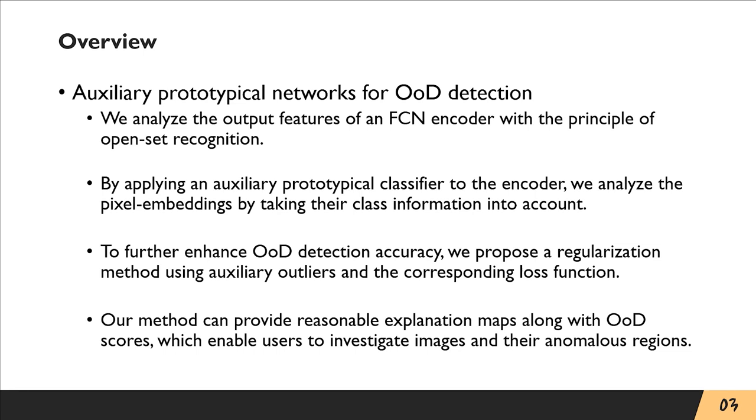This is a brief overview of our work. We analyzed the output features of an FCN encoder with the principle of open-set recognition. By applying an auxiliary prototypical classifier to the encoder, we analyzed the pixel embeddings by taking their class information into account.